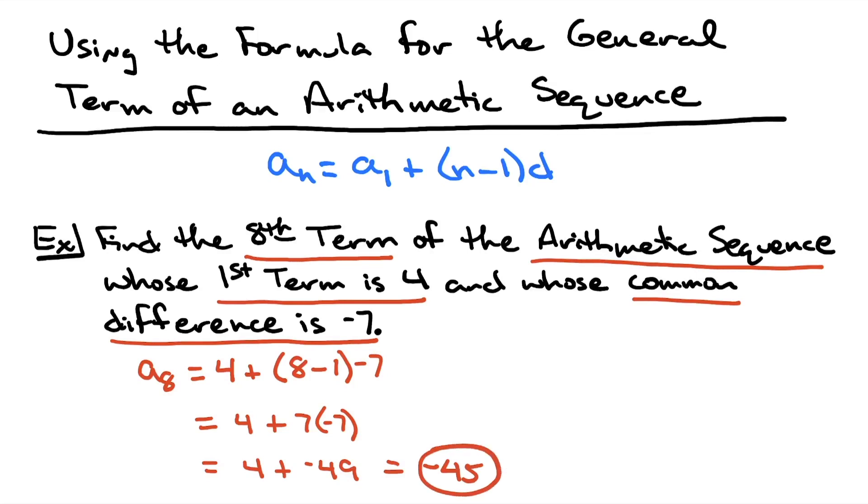So what this tells you is if you have an arithmetic sequence that has a first term of 4 and the common difference is negative 7, when you get to that eighth term it will be negative 45.